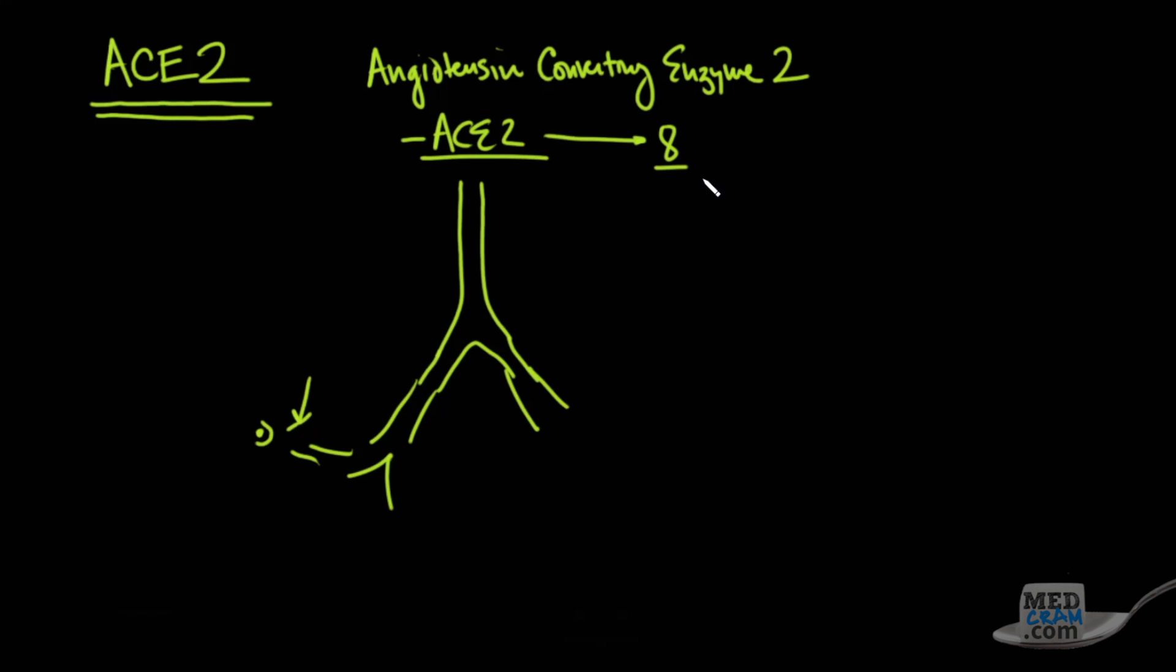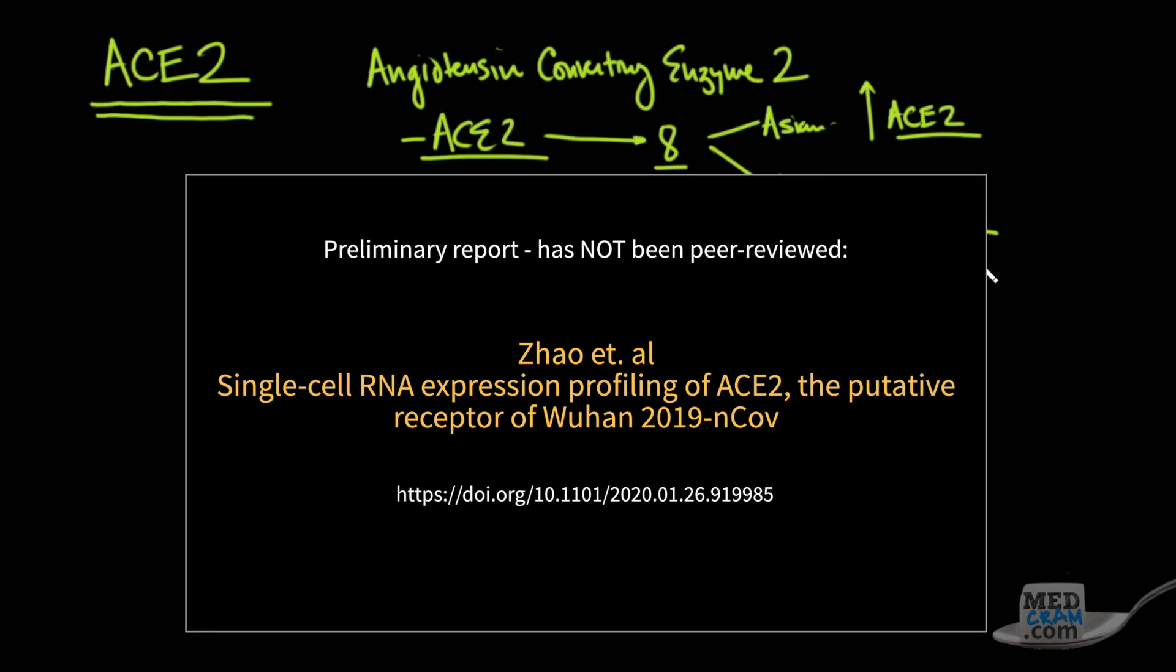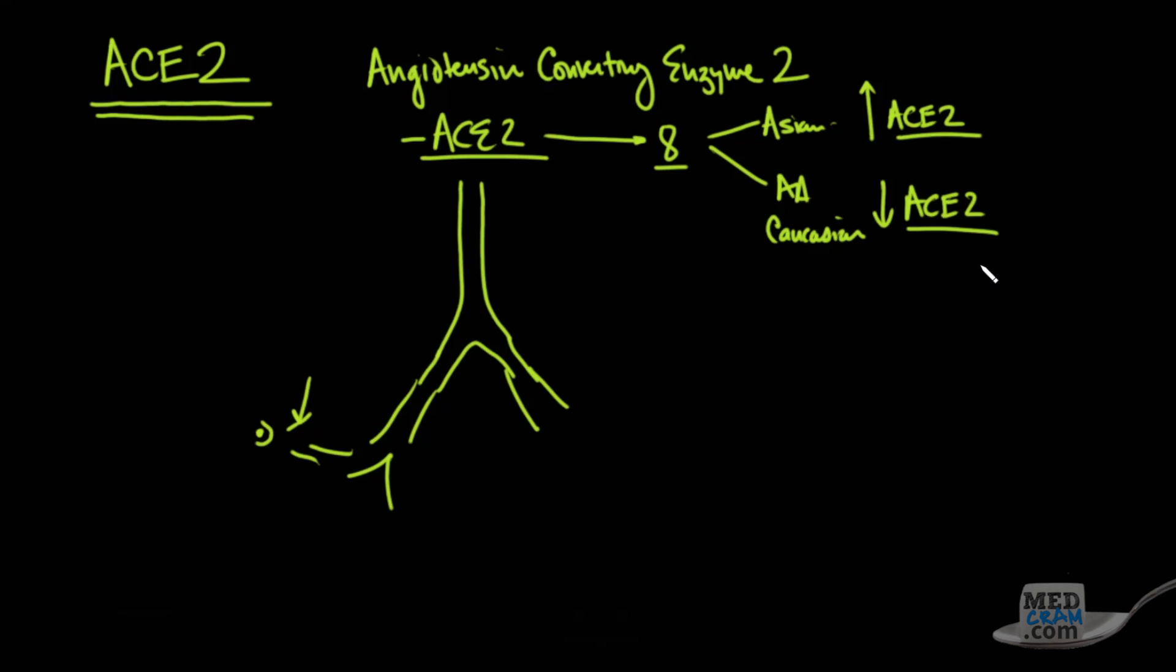But what they found was that the Asian sample had a huge amount of ACE2 expressed, whereas the African-American and Caucasian had relatively low ACE2 levels. And their conclusion was potentially that this could explain why there was such a huge outbreak in China as opposed to other areas with different groups. And so this has been making the rounds on the comments, and I wanted to address that.